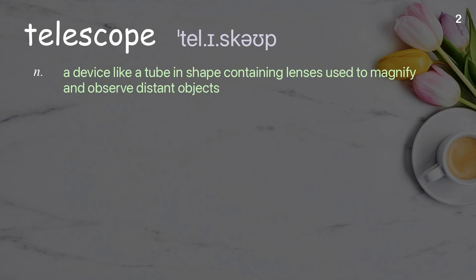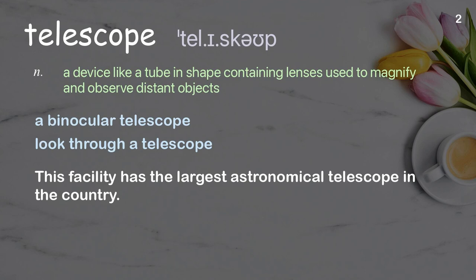Telescope: A device like a tube in shape, containing lenses, used to magnify and observe distant objects. Examples: A binocular telescope, Look through a telescope. This facility has the largest astronomical telescope in the country.